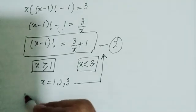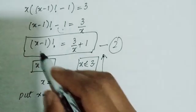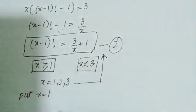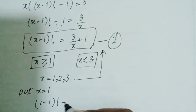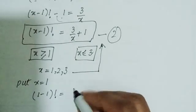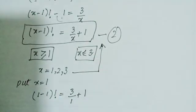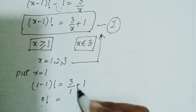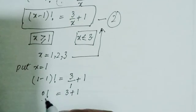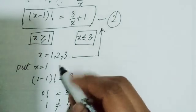First, let's put x equals 1. Substituting into equation number 2: (1 minus 1) factorial equals 3 over 1 plus 1. That gives 0 factorial equals 3 plus 1, which is 1 equals 4. This is impossible, so x equals 1 is not a valid solution.